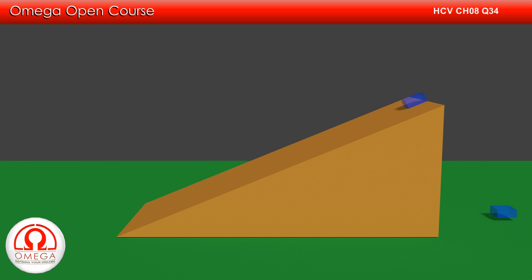Let the ground be our zero potential plane. So when the block is on the ground, its gravitational potential energy is zero. Also, as it is at rest, its kinetic energy too is zero.